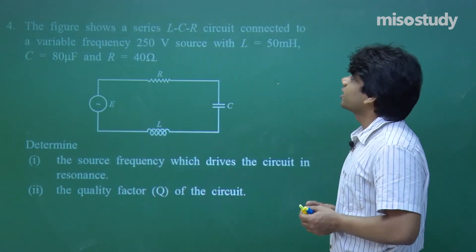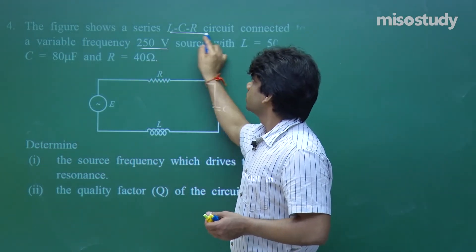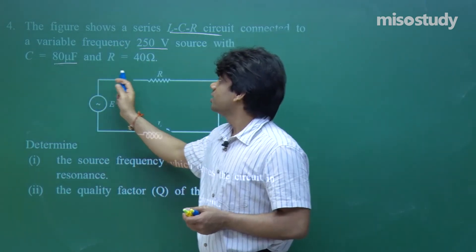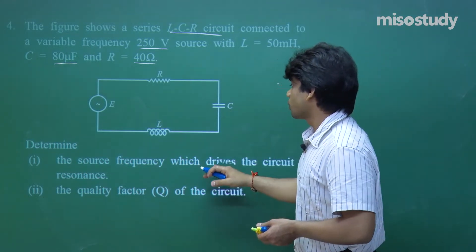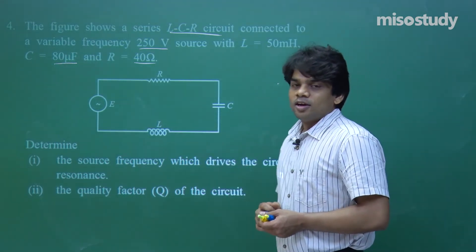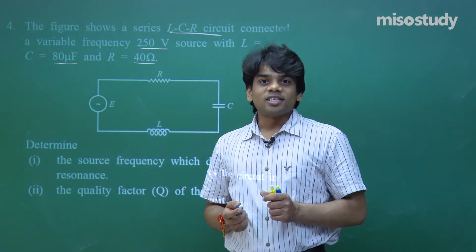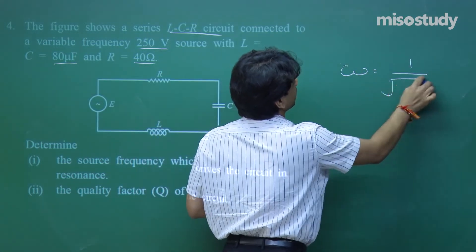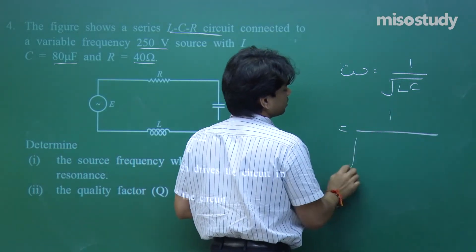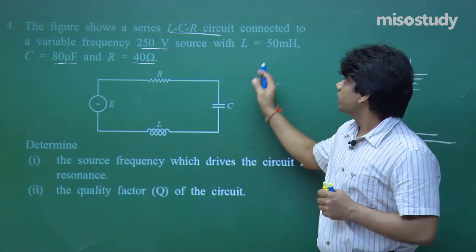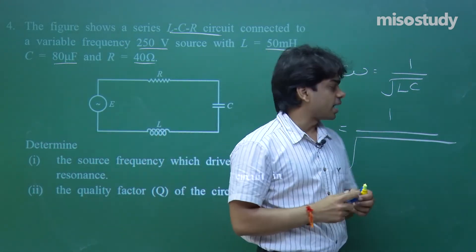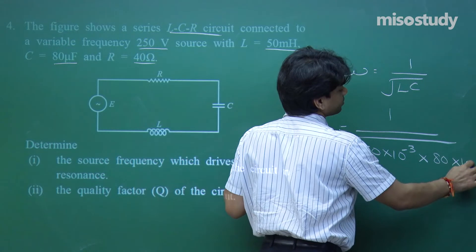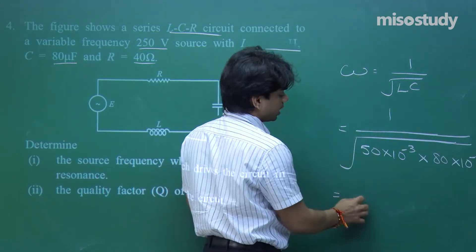The next question: a series LCR circuit is connected to a variable frequency 250 V source with L = 50 mH, C = 80 μF, and R = 40 Ω. Determine the source frequency which drives the circuit in resonance. The resonance condition gives ω = 1/√(LC). Substituting: L = 50×10⁻³ H, C = 80×10⁻⁶ F.